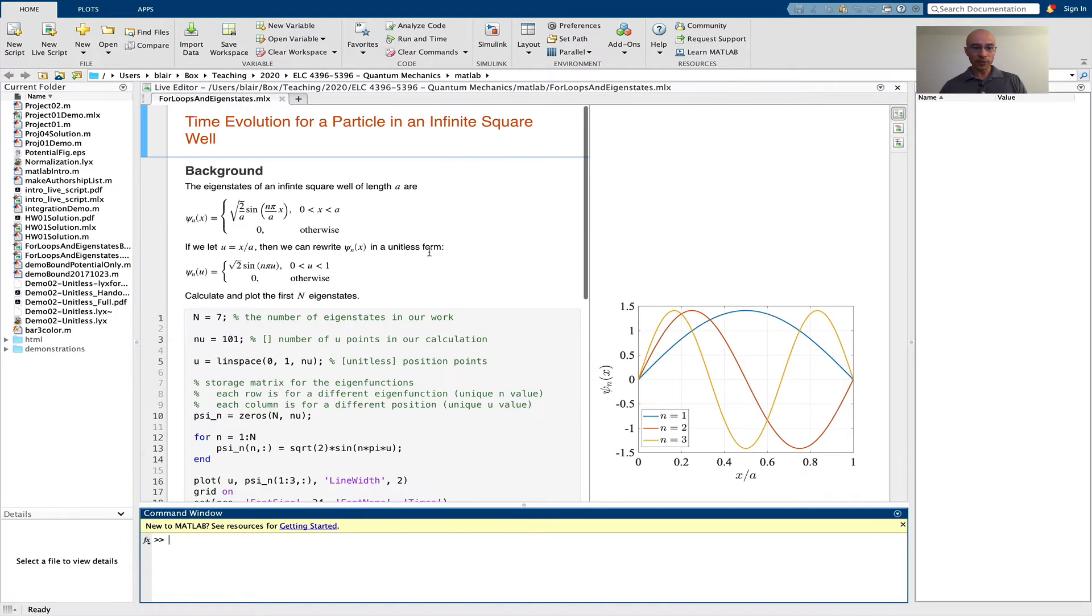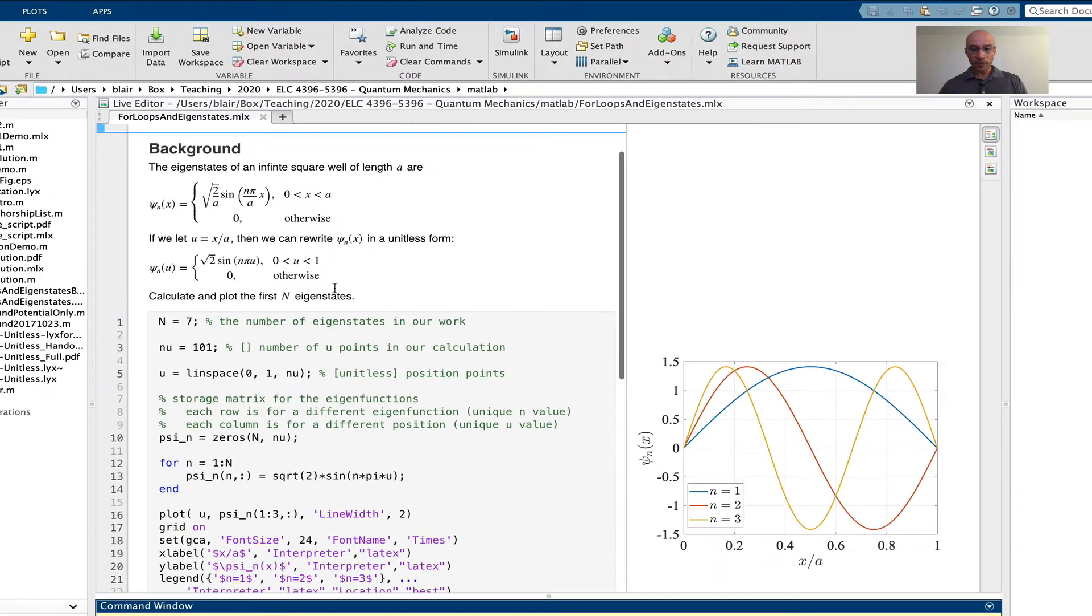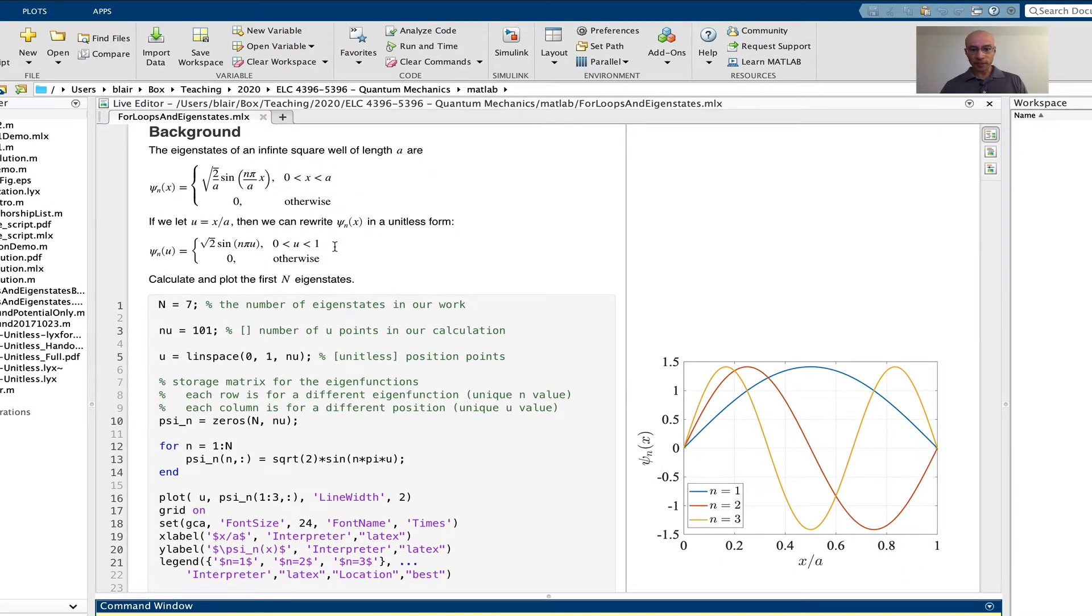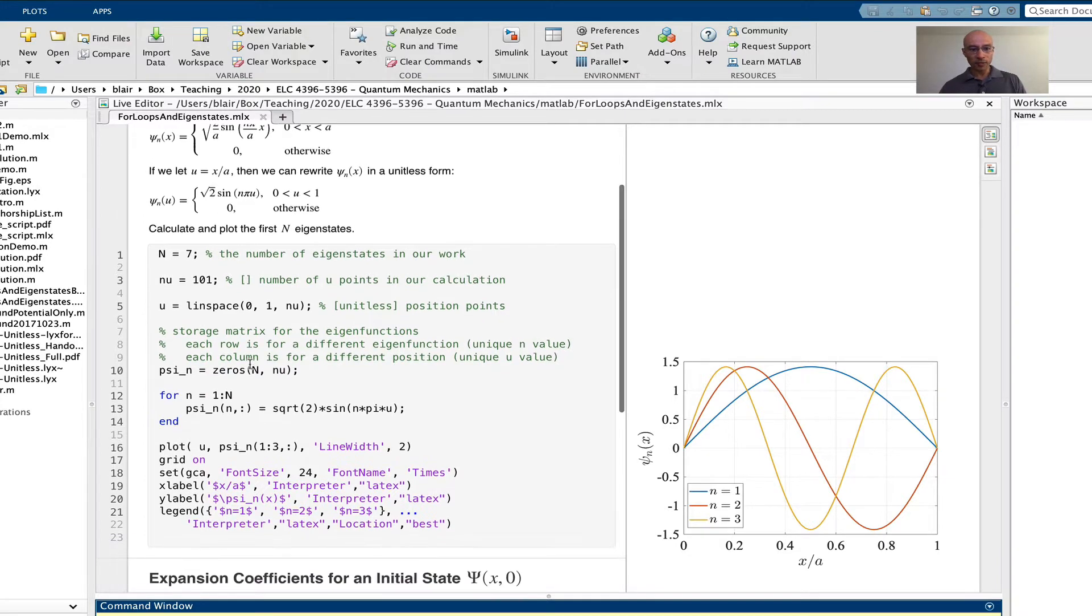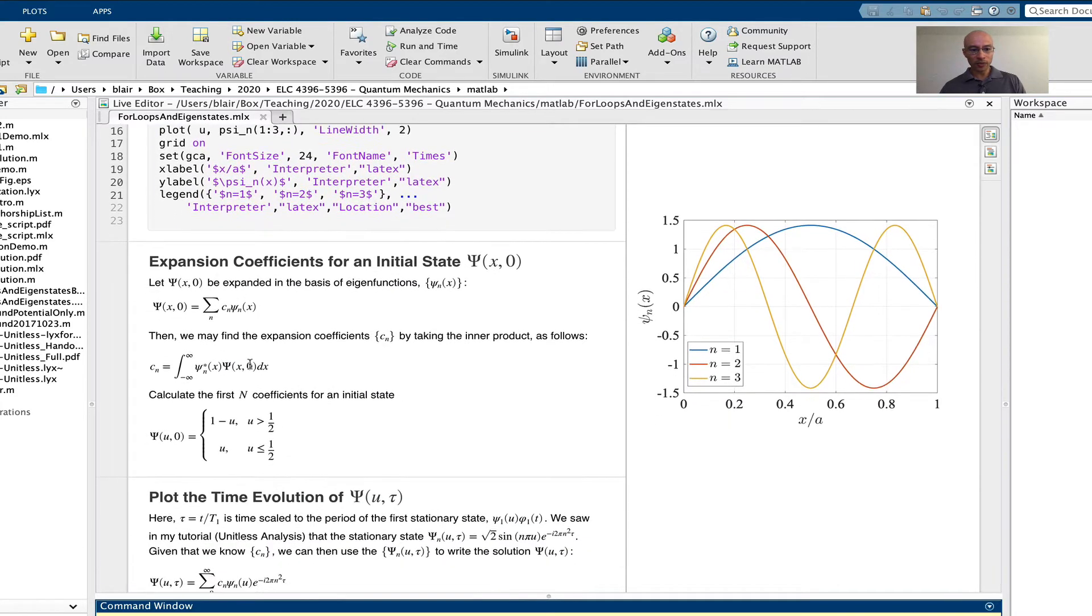In this video, we are continuing with our tutorial on time evolution of a particle in an infinite square well. Previously, I used a unitless analysis to convert our eigenstates of the Hamiltonian to a form where the running variable is a unitless variable. In this video, I'm going to break this next section up into two parts.